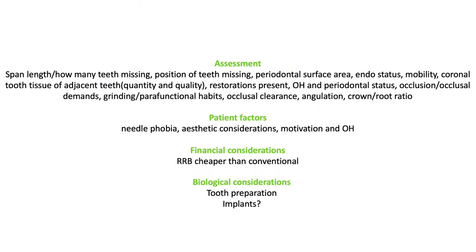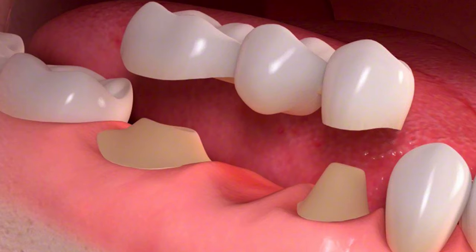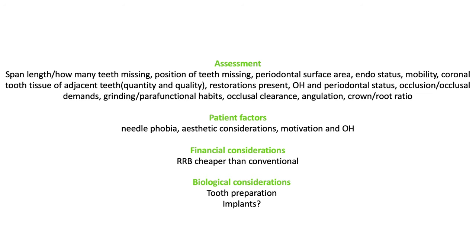The first thing to consider when treatment planning is the length of the span — replacing a gap with one or two teeth missing, or in rare cases three teeth at most. You also need to consider the positions of the missing teeth and whether they cross the midline. Other considerations include the periodontal surface area of the abutment teeth, their endodontic status, if they're mobile, the quantity and quality of tooth structure remaining, any existing restorations, the patient's oral hygiene and periodontal status, their occlusion and parafunctional habits, occlusal clearance, and the crown-to-root ratio.